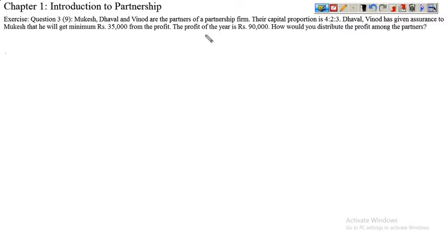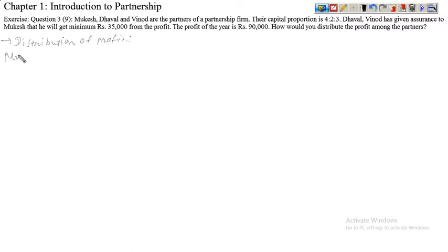Remember, the profit and loss sharing ratio is not given, so we will distribute the ₹90,000 equally. So let's first distribute the profit. Mukesh gets ₹90,000 multiplied by 1/3, because we are distributing equally in ratio 1:1:1. So Mukesh will get ₹30,000.